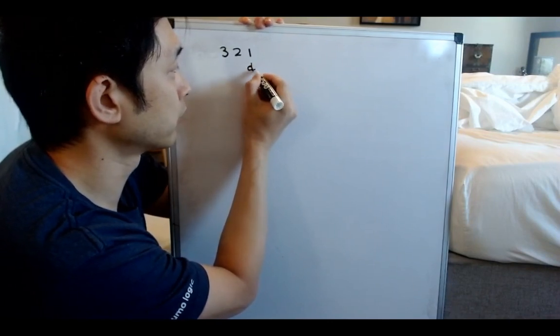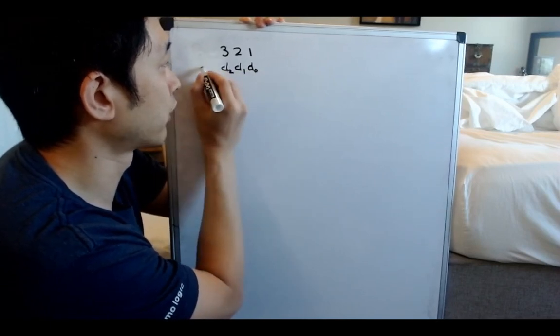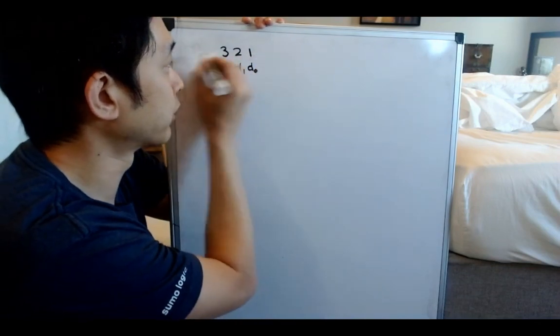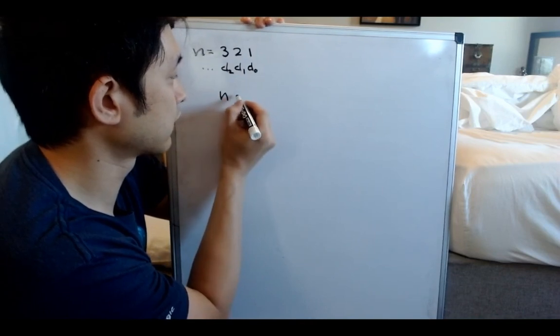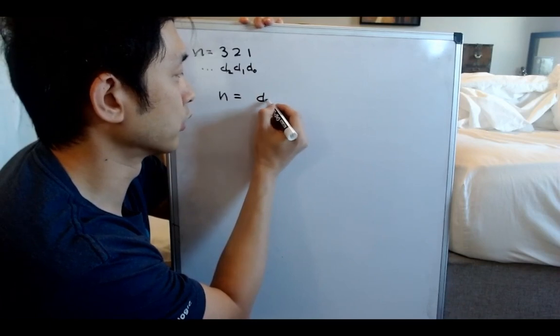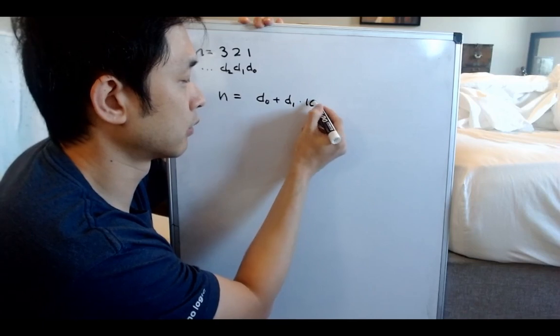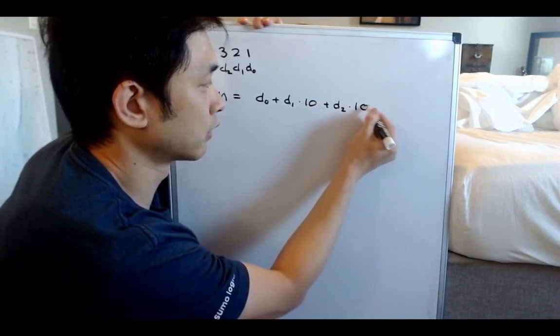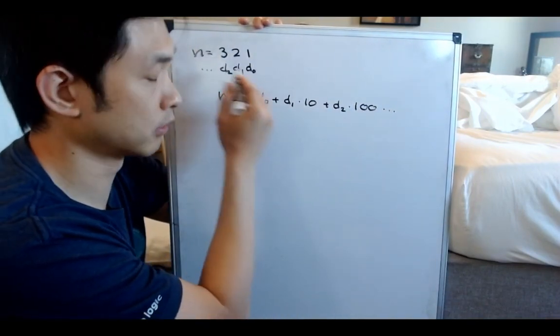Start with zero, go move on to D1, D2, and so on and so forth, however many digits there are. Now, we could represent this number here with our digits by some sort of equation like this. We could say it'd be equal to D0 plus D1 times 10 plus D2 times 100, and so on and so forth.